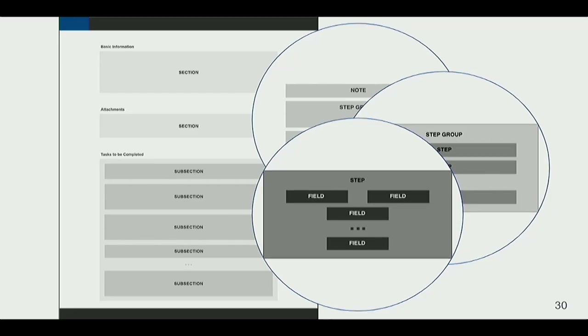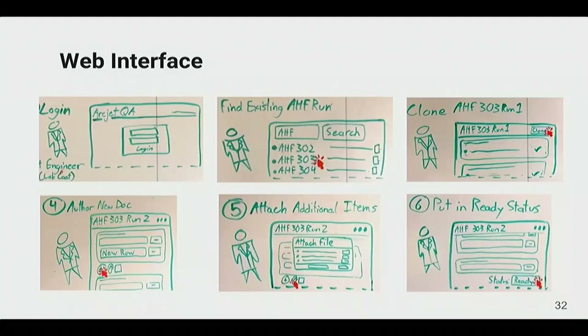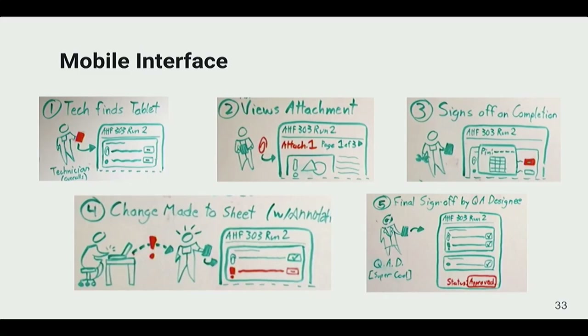Sometimes when completing a task, the person has to provide supplemental information — for example, if you're installing a window, you have to say which window was installed because each is individually tracked and calibrated. In terms of design, we decided to have a web interface where the test engineer would enter the task sheet and make all the edits they needed. When they were ready for the task to be completed, they would put it into the ready status. At that point, we had a tablet interface — a simplified version of the website focused on tasks and signatures.